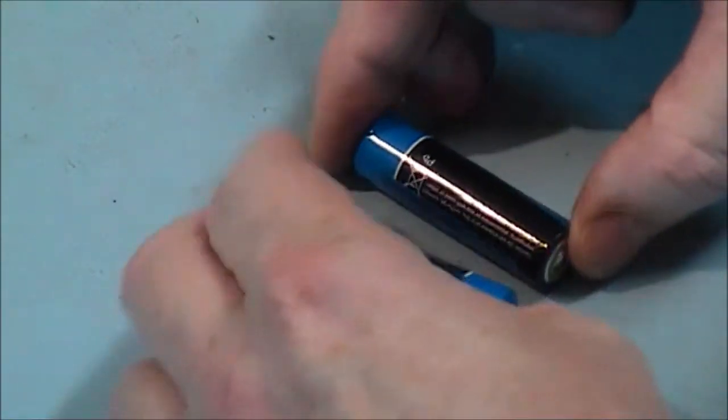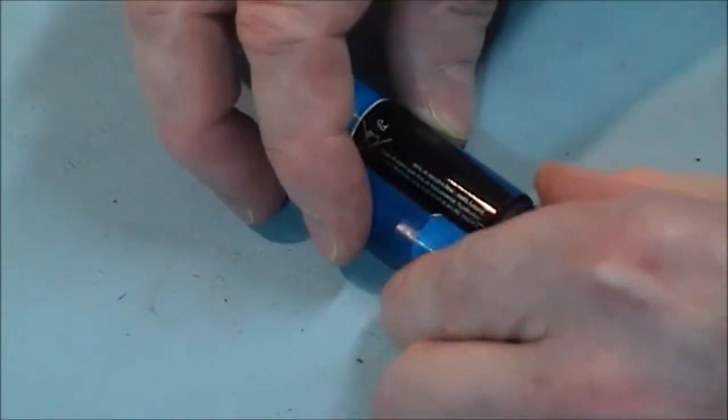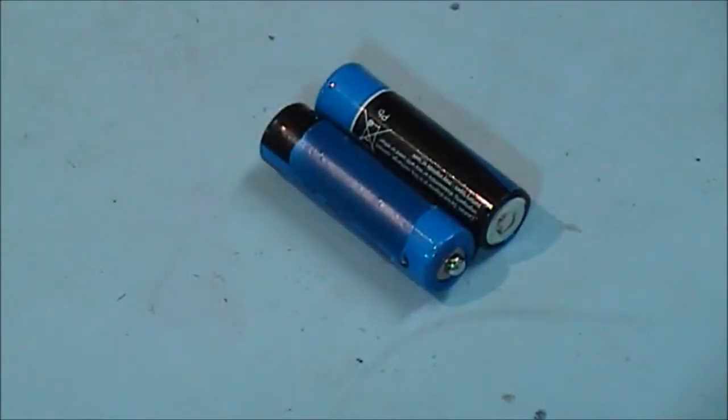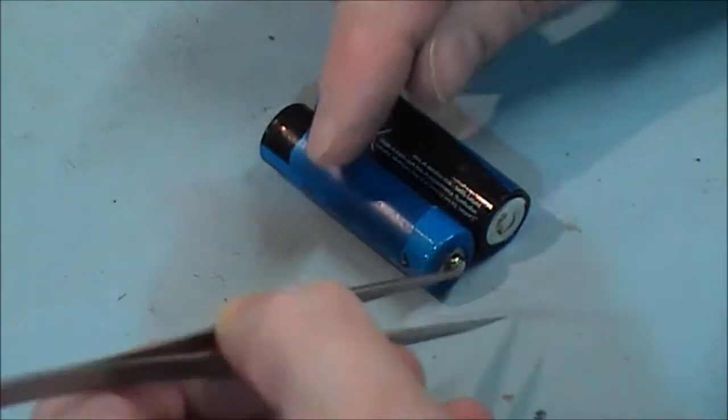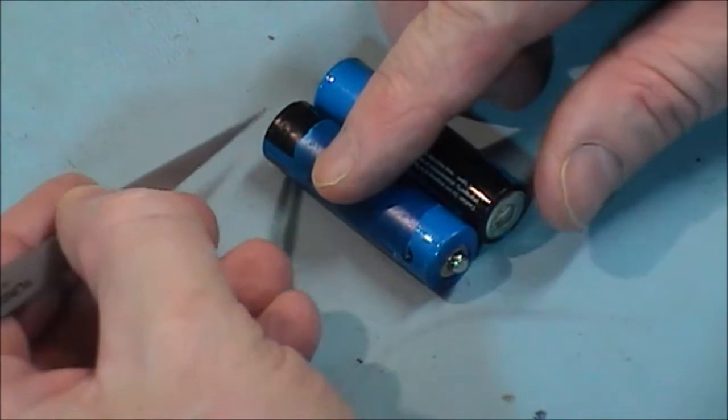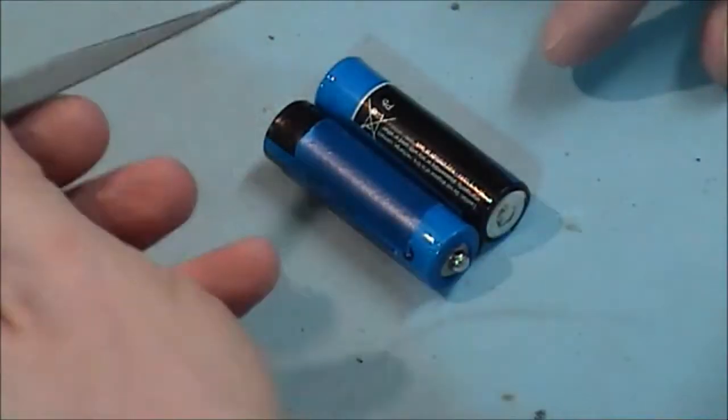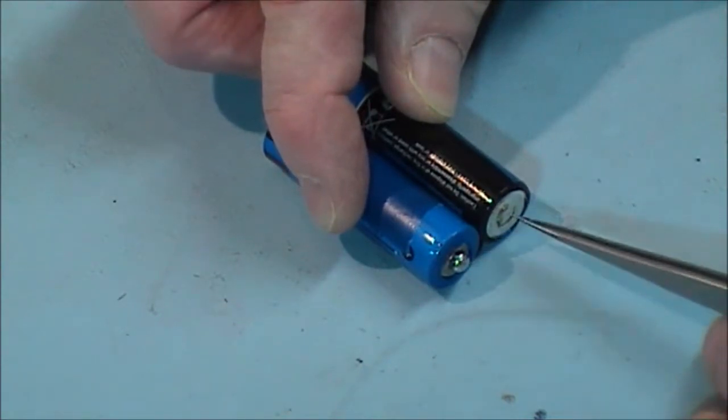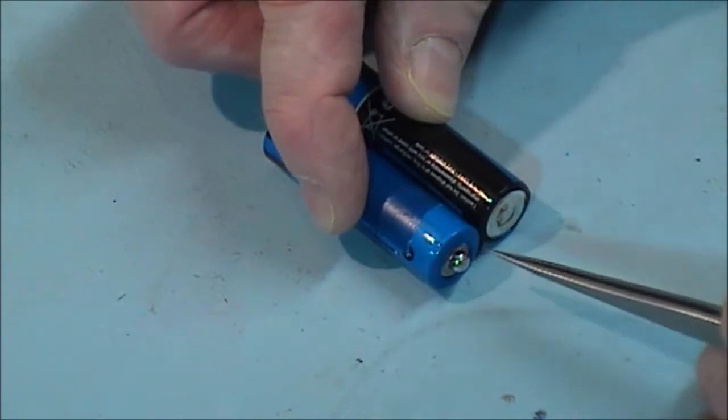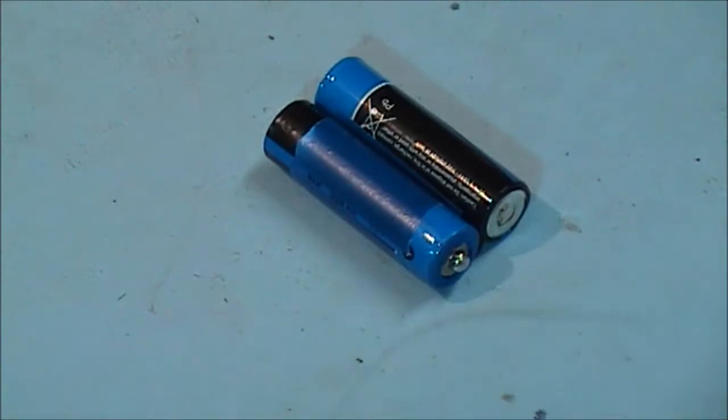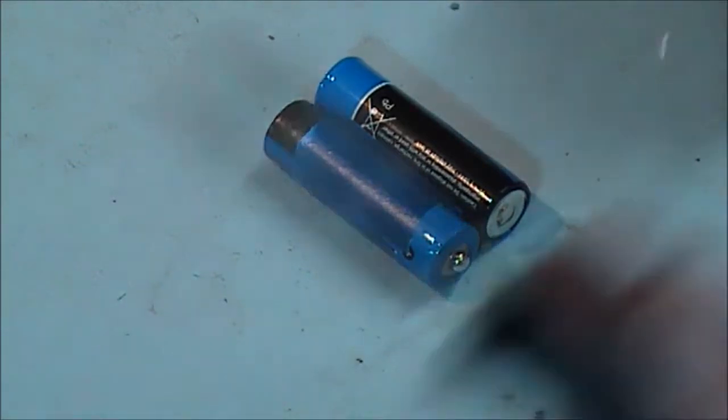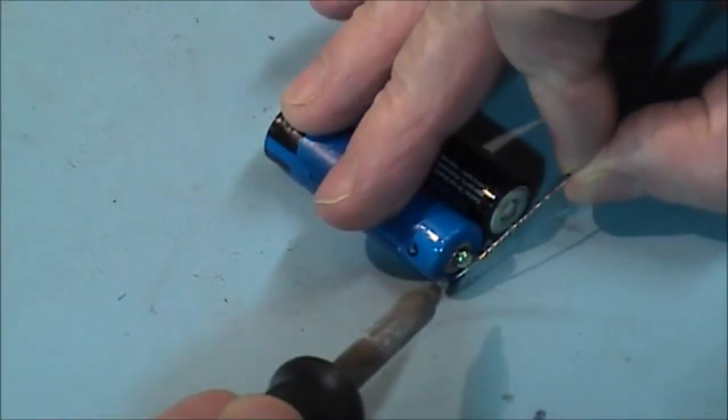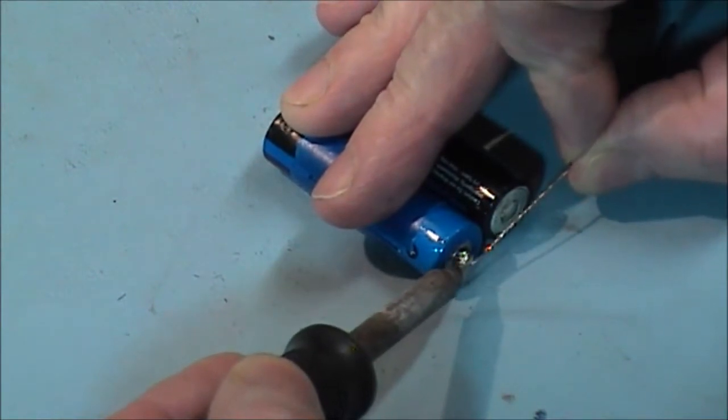I need to link them so the negative and the positive poles—that's the positive pole and that's the negative pole, and here we have the negative pole on this battery and a positive pole. What I'm going to do first is put a solder bridge across these two points. I have it tinned already.